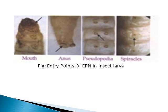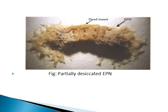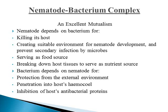Additionally, the spiracles — located laterally on the body of the insect and mainly used for respiration — also serve as entry points for the EPN. This picture shows a partially desiccated EPN, and the insect body is getting damaged and is full of entomopathogenic nematode juveniles. The infective juveniles are getting out from the body of the insect.